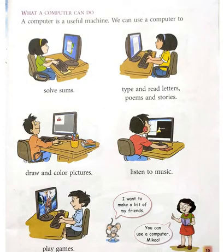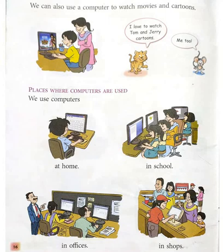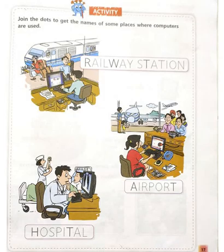In this chapter, we learned what a computer can do. A computer can solve sums, type and read letters, poems and stories, draw and color pictures, listen to music, play games, and watch movies and cartoons. Places where computers are used: we use computers at home, in hospital, in offices, in shops, at railway station, and at airport.